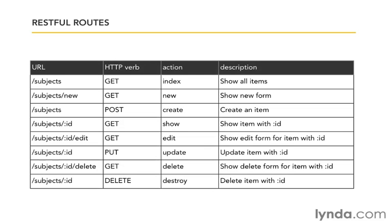Here's a table showing how routes map. The first column has the URL requested, the second has the HTTP verb, and the third has the controller action it maps to. Notice the controller name and ID are still in the URL, but the actions are mostly gone — the HTTP methods now determine the action. A route is a combination of the URL and the HTTP method. For example, show, update, and destroy all have the same URL; it's the HTTP method — GET, PUT, or DELETE — that makes the difference. Same with index and create.